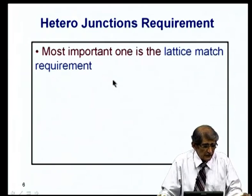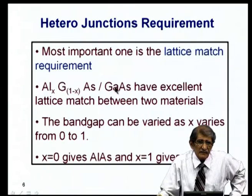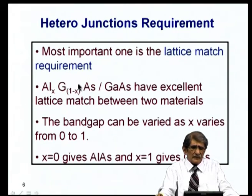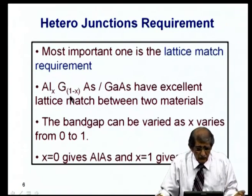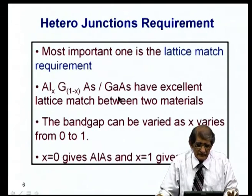The most important requirement for heterojunctions is lattice matching. When growing one material on another, the lattice constants must be comparable. Silicon (5.43 Å) and germanium (5.65 Å) have different lattice constants, creating difficulty. However, gallium arsenide and germanium have a good lattice match. For our purposes, we focus on aluminum gallium arsenide on gallium arsenide, since aluminum arsenide has excellent lattice match with gallium arsenide, so AlGaAs also matches well with GaAs.